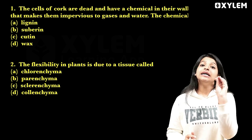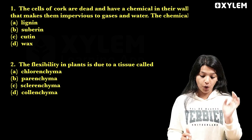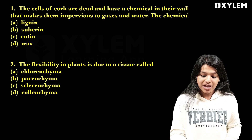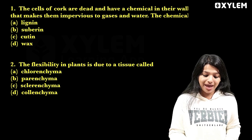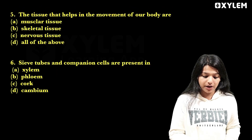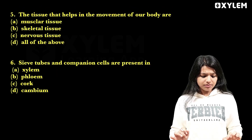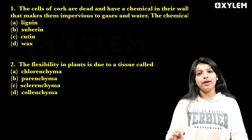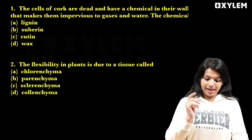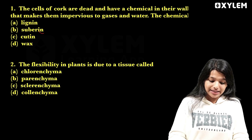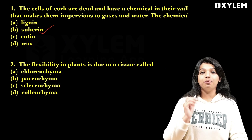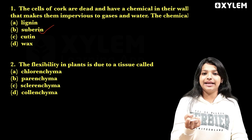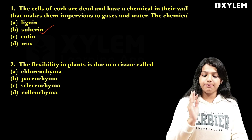First question: cells of cork are dead and have a chemical in their wall that makes them impervious to gases and water. What is the chemical? The answer is suberin deposition.